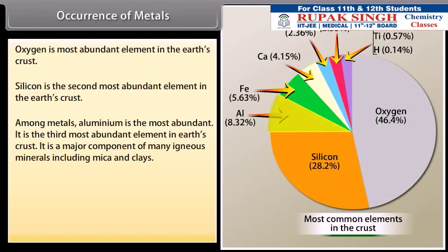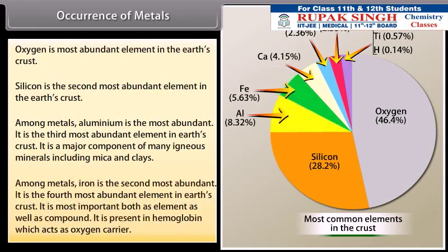Among metals, iron is the second most abundant. It is the fourth most abundant element in earth's crust. It is most important both as element as well as compound. It is present in hemoglobin which acts as oxygen carrier.